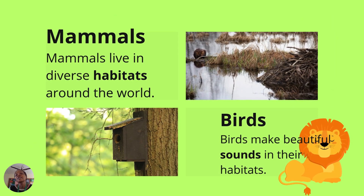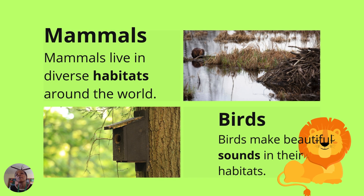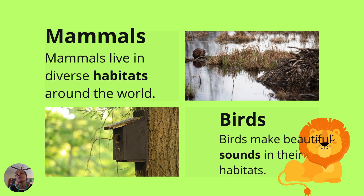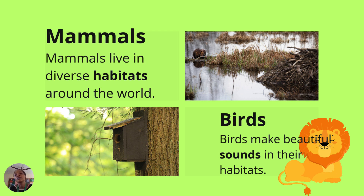We have different types of animals. We have mammals — mammals live in different habitats around the world, you find them in different habitats all over the world. We also have another group of animals called birds. Birds make beautiful sounds in their habitats. Sometimes when you wake up in the morning you can even hear the chirping sounds.